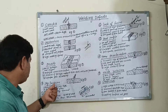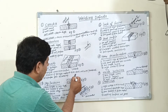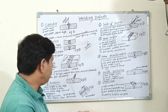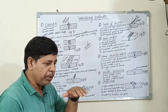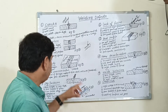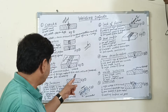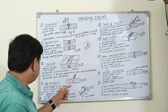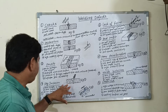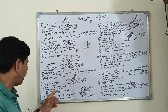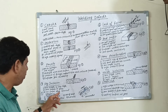Number four is slag inclusion. When you perform the welding, the flux is converted into slag. The slag floats on the surface due to its low density, but some amount of slag tries to penetrate into the molten metal. Reasons behind slag inclusion include: arc length is very high, poor quality of flux, and no proper slag removal.